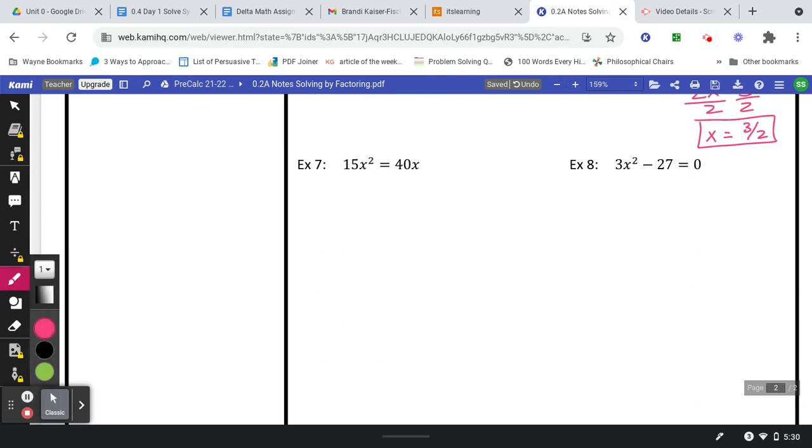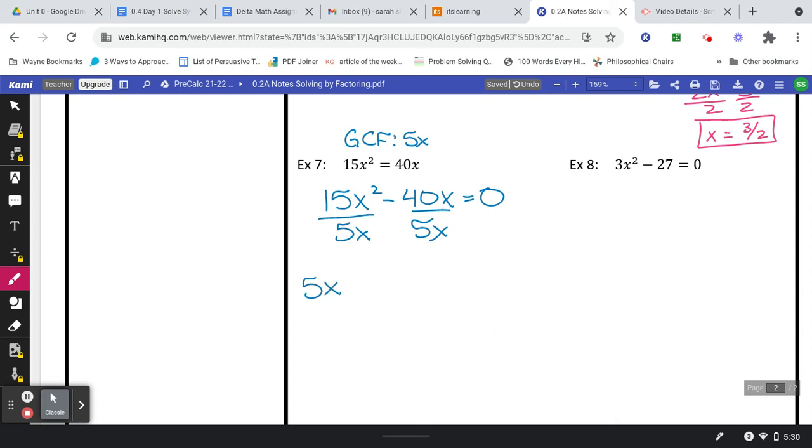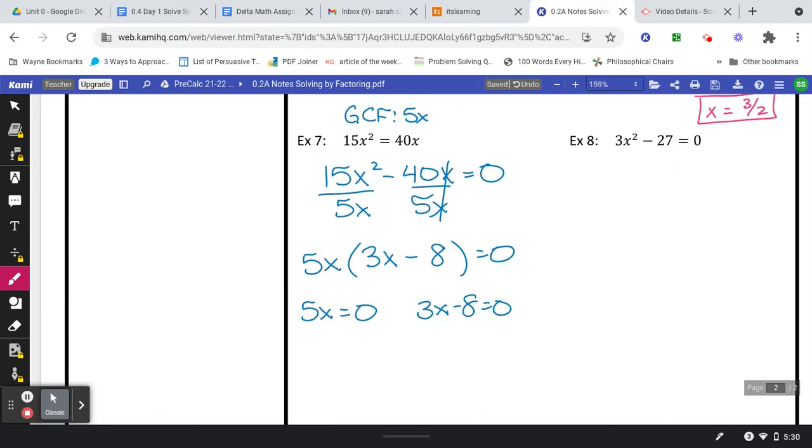Problem number seven, we'll need to again move the 40 to the other side. I'm just gonna do that in my head. I'm gonna know it's gonna be minus 40X on the left. And looking for a greatest common factor, think about a number that goes into 15 and 40. I'll have my greatest common factor here be 5X. Always put the 5X, the greatest common factor, in front and see what's left. That should give us 3X minus 8. Set both equal to zero and solve.